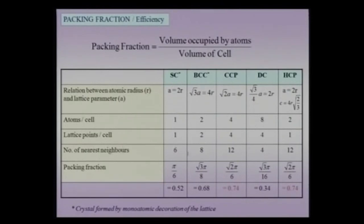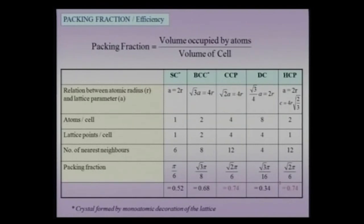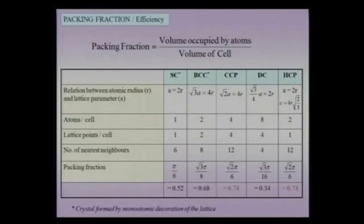The packing fraction contains the transcendental number π, so values like 0.74 are approximate. Packing fractions: simple cubic ≈ 52%, BCC ≈ 68%, CCP and HCP ≈ 74%, and diamond cubic ≈ 34%. The highest possible packing fraction for equal-sized spheres is 74% — you cannot achieve more than 74% packing with equal spheres. Structures with more covalent character have lower packing fractions.